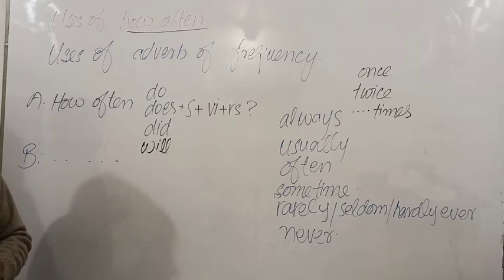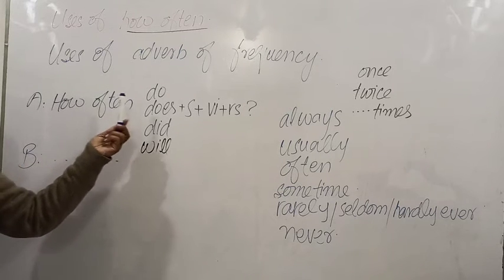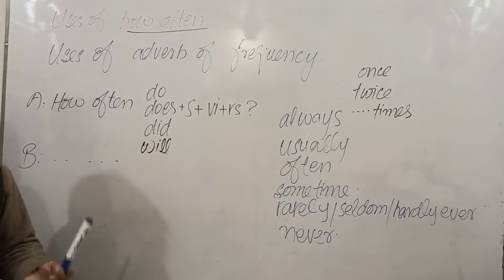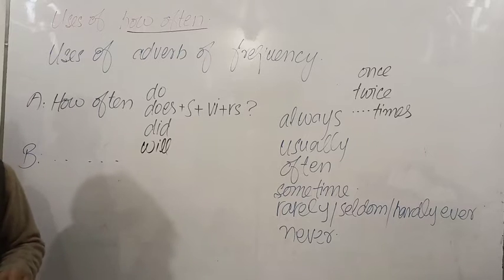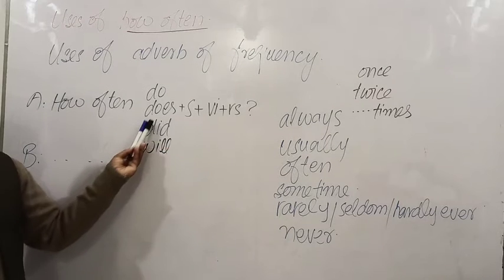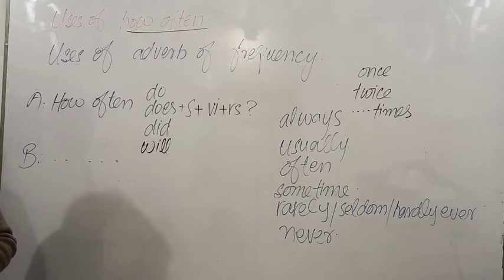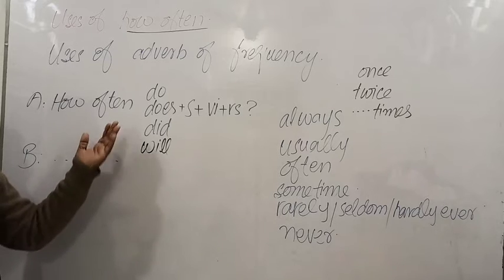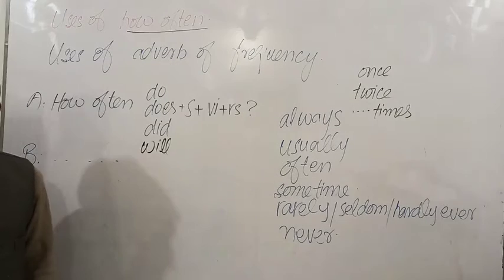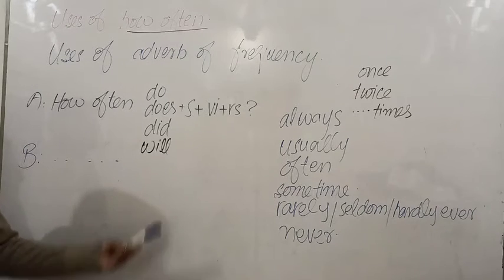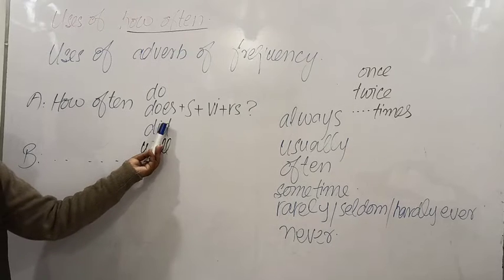For singular nouns, we use 'does': 'How often does your father go to Peshawar?' — 'Once a month,' 'twice a month,' or 'He sometimes goes to Peshawar.' For past tense, use 'did': 'How often did you play cricket when you were young?' — 'I usually played cricket,' 'I sometimes played cricket,' because the question is about the past.